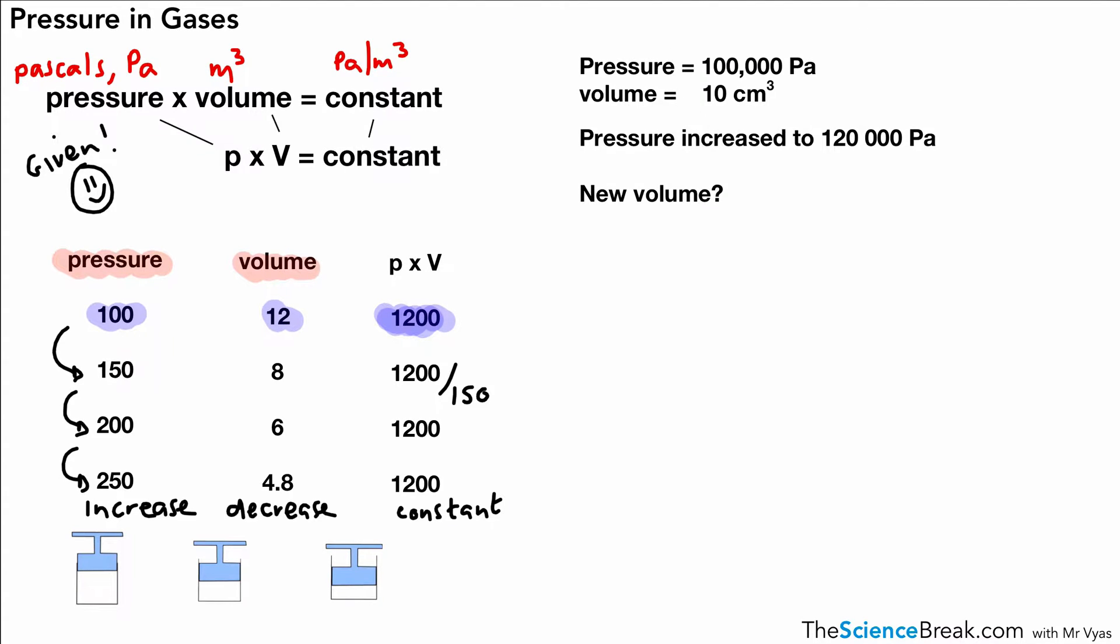That's the relationship between pressure and volume of a gas in a closed container. Let's try a question. We have gas in a container at a pressure of 100,000 pascals and a volume of 10 centimeters cubed. We'll leave it as centimeters cubed. We want to know the new volume in centimeters cubed after changing the pressure.